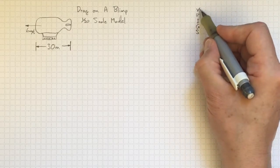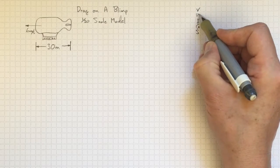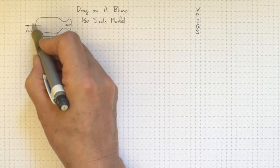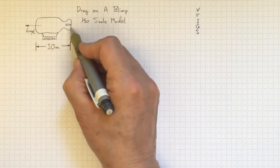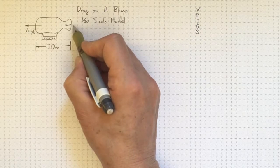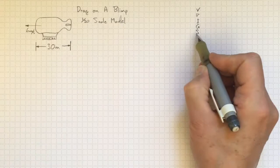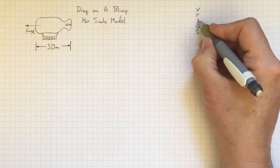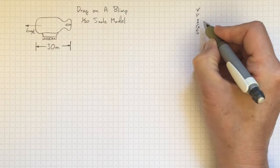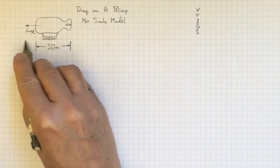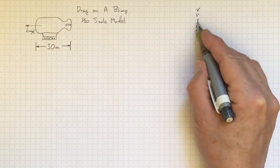There will be viscous forces. That's going to be important. There'll be pressure forces because as the blimp moves along, there's going to be a high pressure area on the front and a low pressure area on the back. That's part of what produces the drag in addition to the viscous forces on the side. The inertial forces, almost always important as long as there's moving fluid. So as the fluid accelerates to go around the blimp, we're going to need to take that into account.